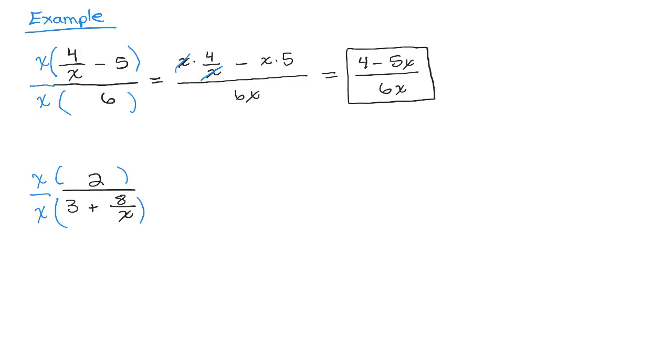Remember, you can't cancel because 4 minus 5x is an entire quantity. 4 is not a factor, you can't cancel with the 6. And x is not a factor in the numerator so that can't cancel as well. All right. Try the second problem on your own. Put the video on pause and then come back.